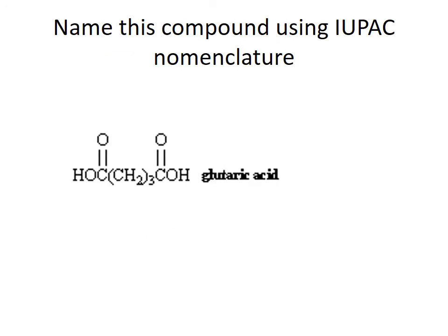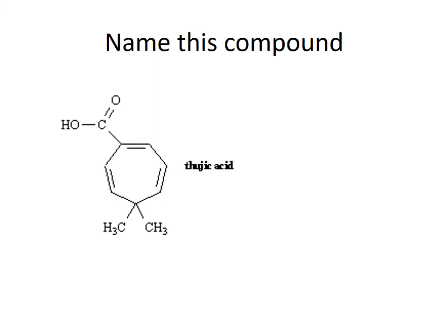Go ahead and name glutaric acid using the IUPAC method. To name this compound, we count the carbons and find there are five. So it's a pentane and it's a dioic acid, so we call it pentanedioic acid. There's no need to say 1,5- because the acids must be on the ends, so pentanedioic acid is sufficient.